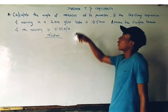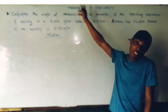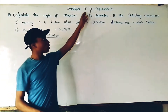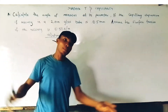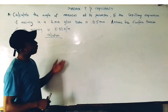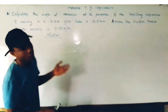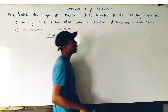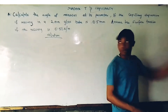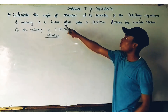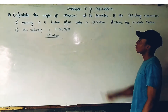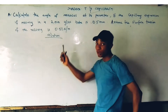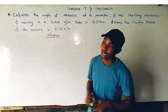Today we are going to be looking at a question on fluid mechanics — specifically surface tension and capillarity. The question is: calculate the angle of the meniscus at contact if the capillary depression of mercury in a 2mm glass tube is 0.5mm, assuming the surface tension of mercury is 0.5 N per meter.